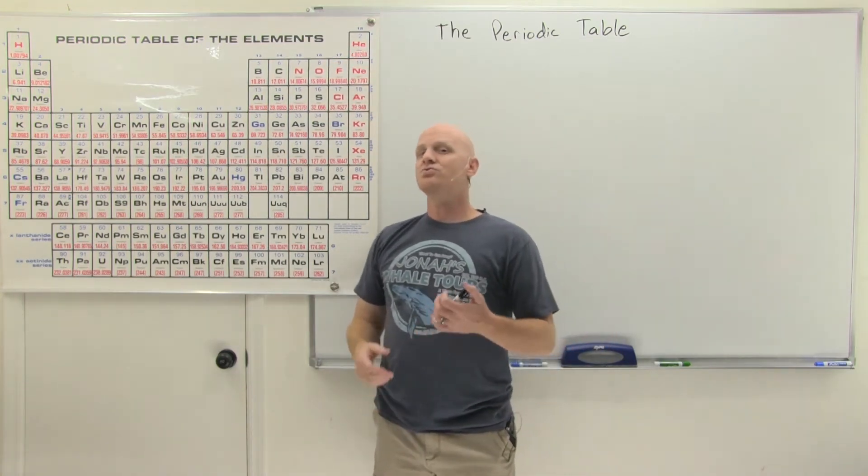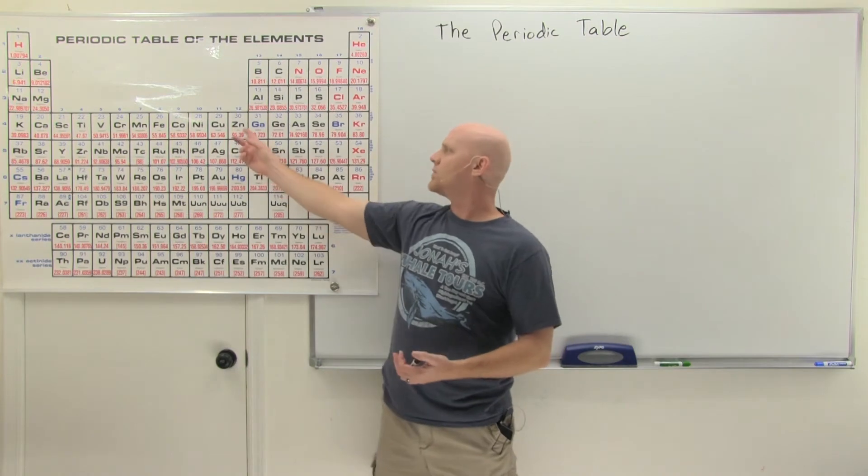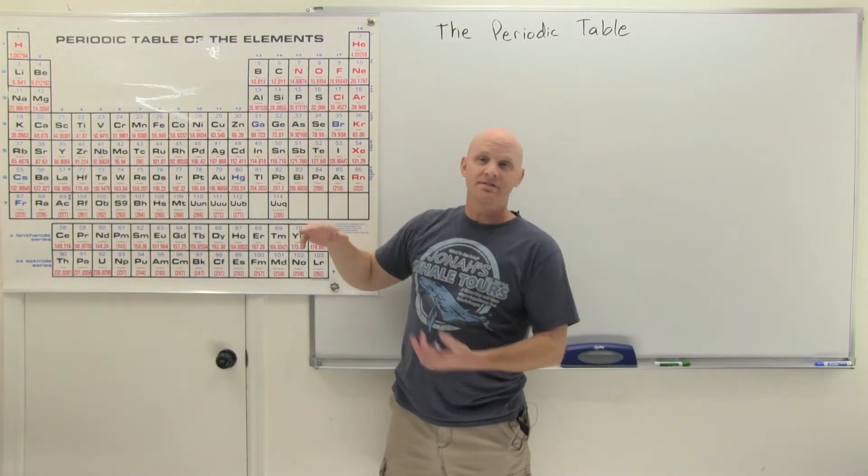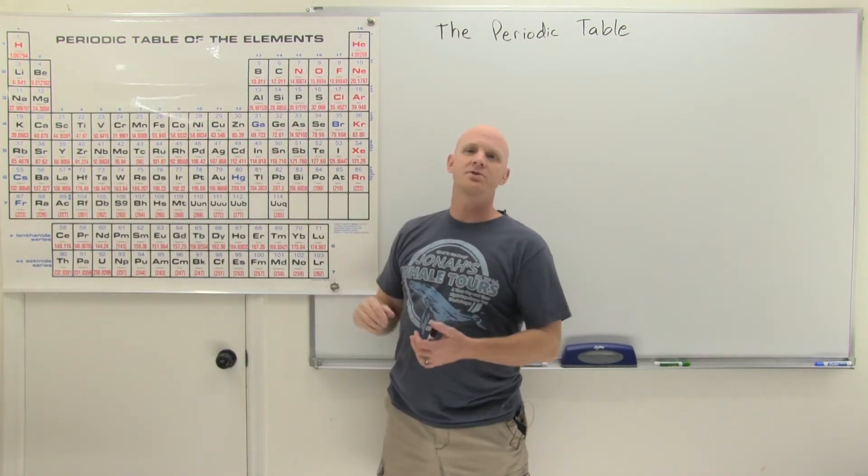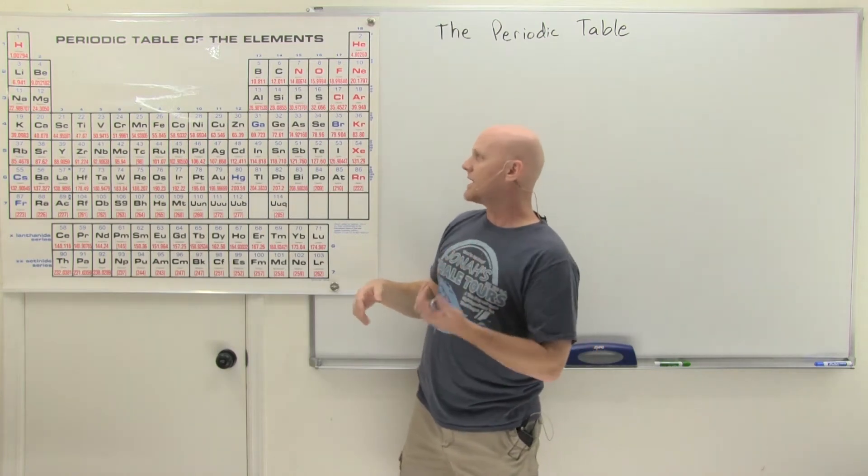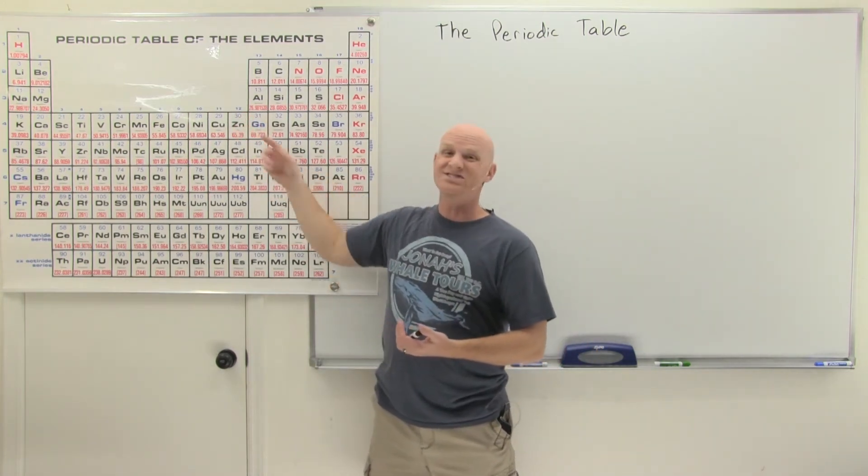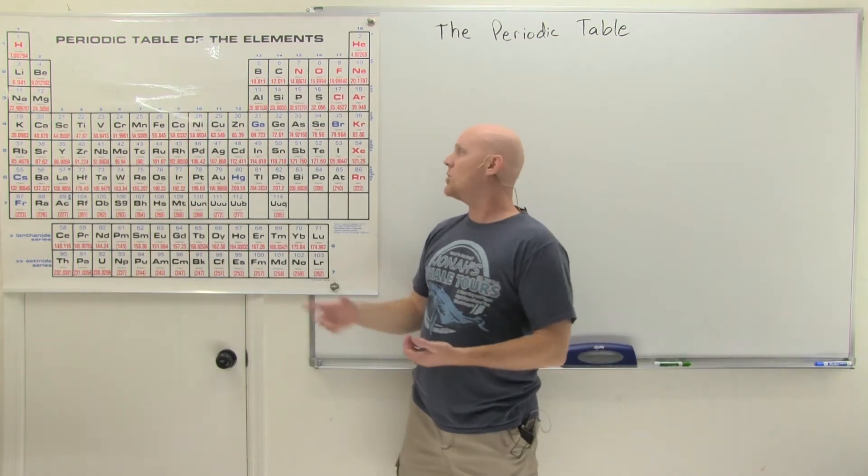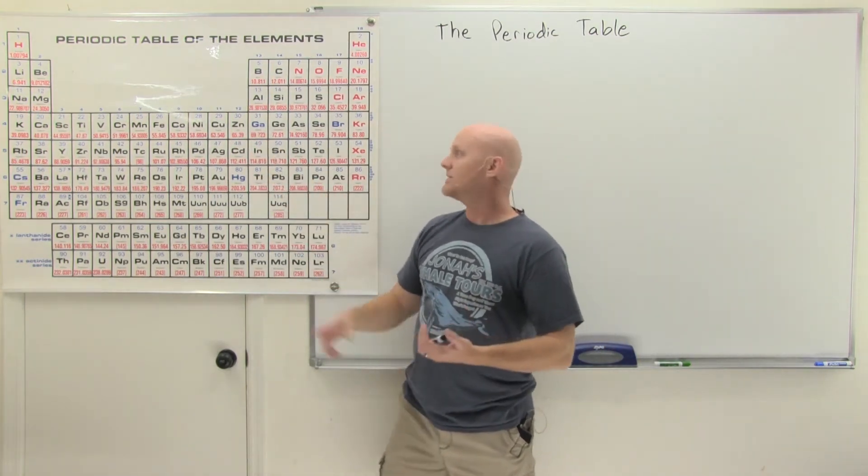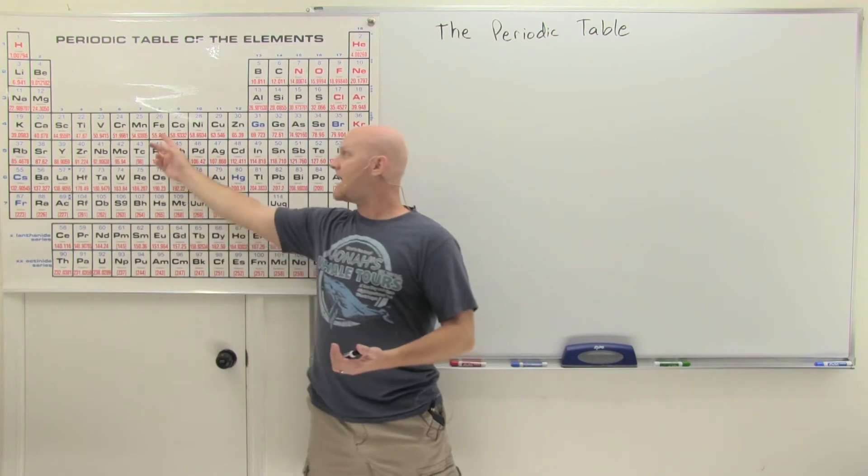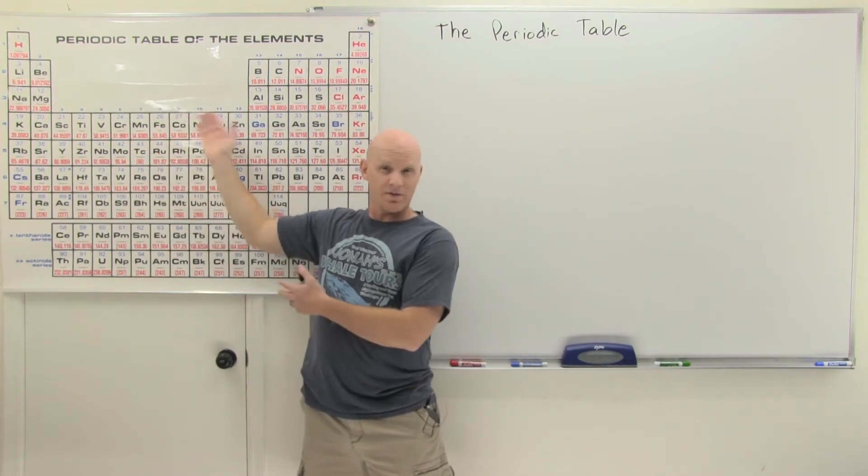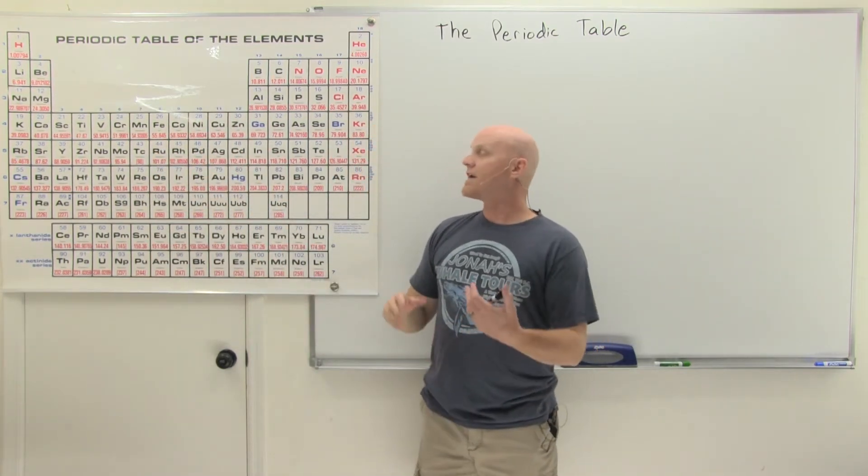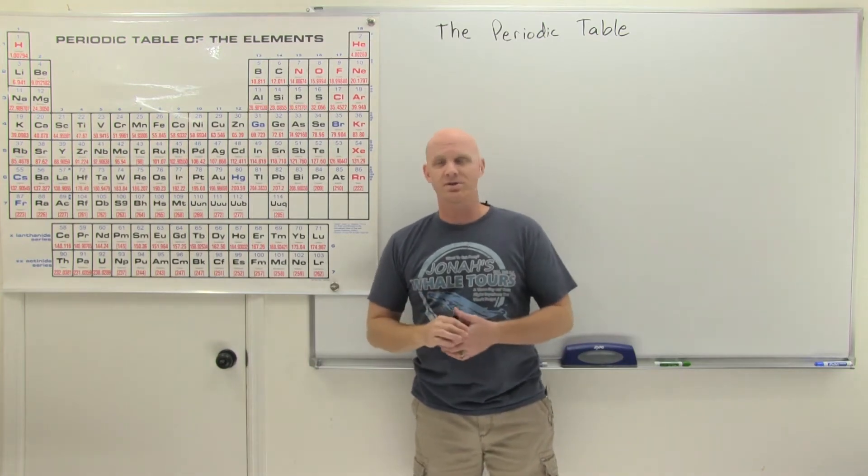And as I mentioned in the last lesson, you should really probably work on memorizing the elements that correspond to at least the first 30 element symbols. And again, I don't think you have to know that atomic number 30 is zinc. For most of you guys, that's not going to be required of you. But knowing that Zn stands for zinc, that Cu stands for copper, that Fe stands for iron, which is one of the unusual ones with the Latin root. That's probably worth your time up through the first 30 elements here.